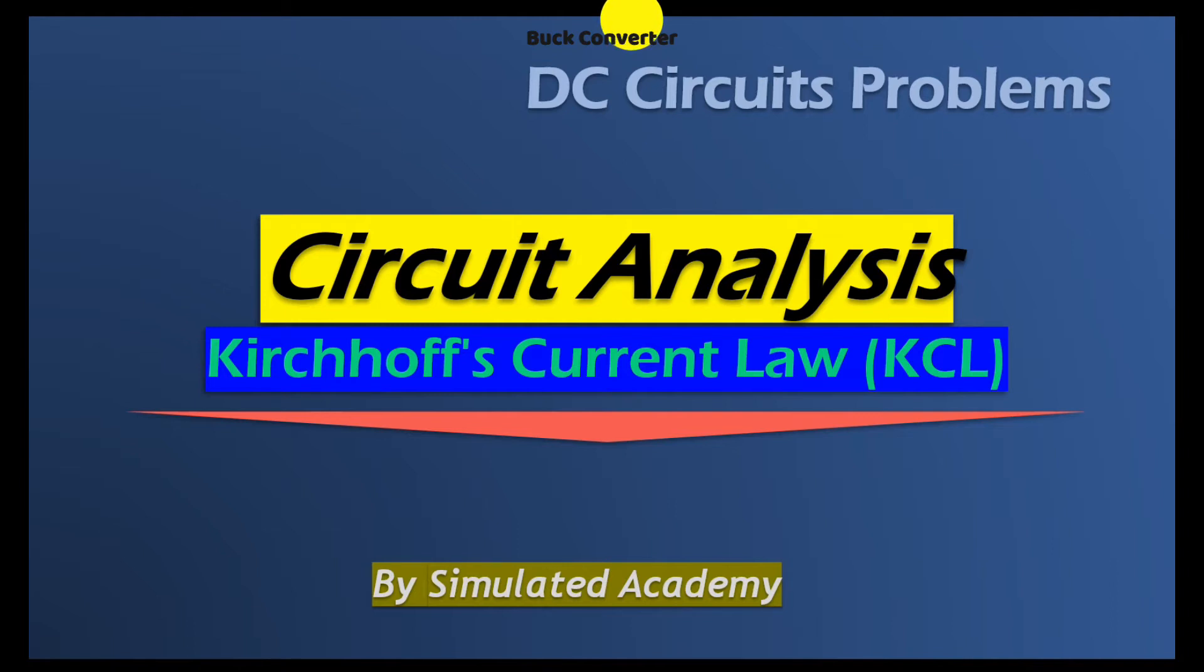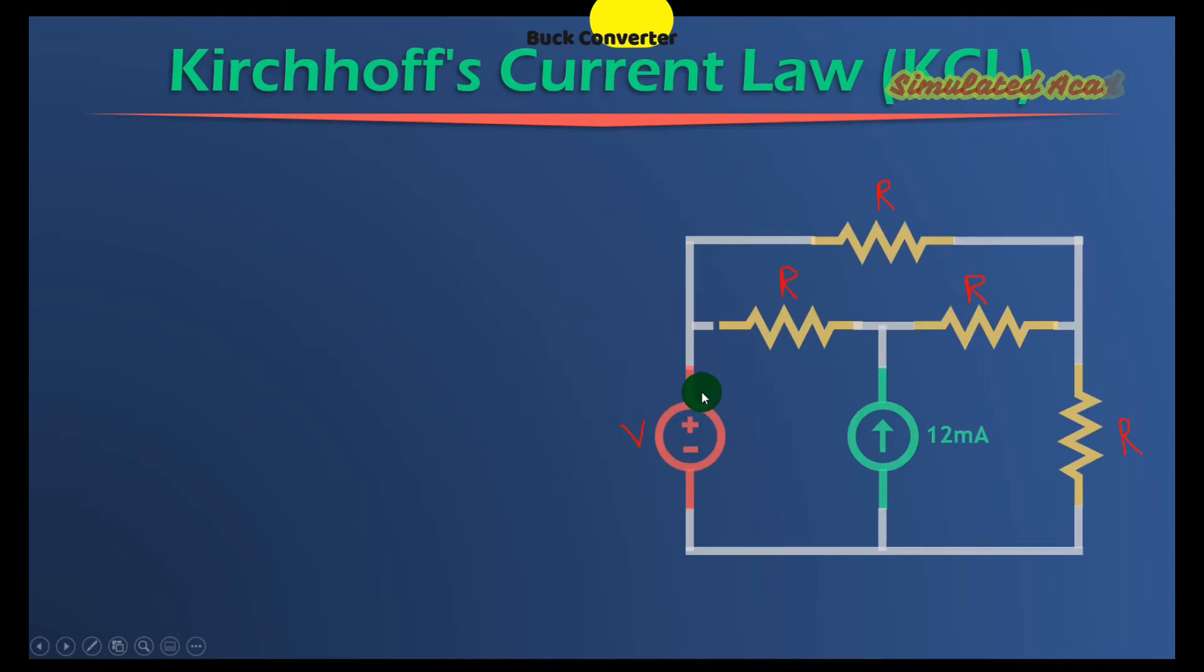Welcome back to DC circuit analysis problems. This video will explain a problem related to Kirchhoff's Current Law. For example, we have given this circuit. Each resistor has a value of R and the voltage source has a value of V.